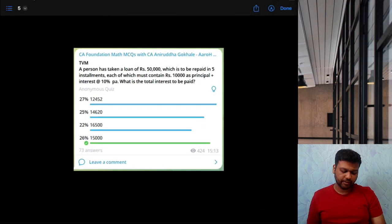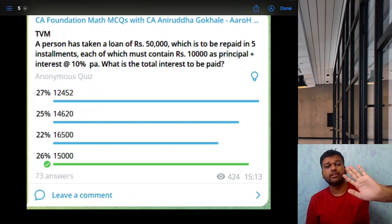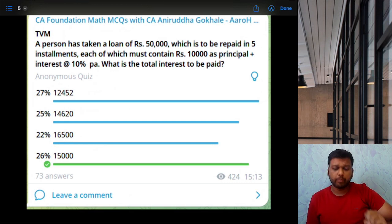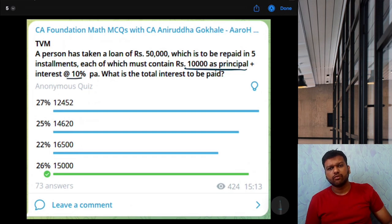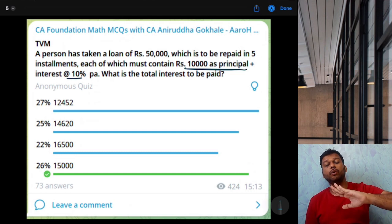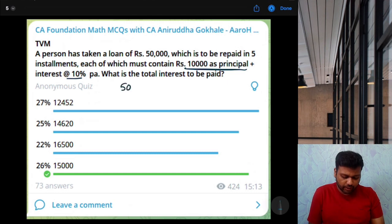Next. A person has taken a loan of 50,000 which is to be repaid in 5 installments. Each of which must contain rupees 10,000 as principal plus interest at 10% per annum. What is the total interest to be paid? This is not EMI. This is not annuity. Because the condition is that you have to repay 10,000 plus whatever is the interest.